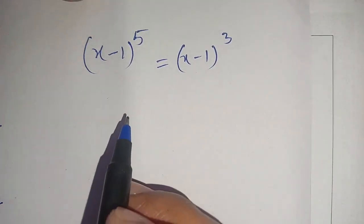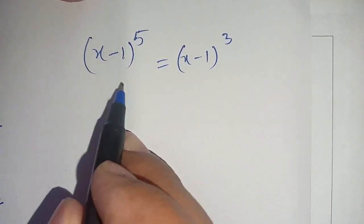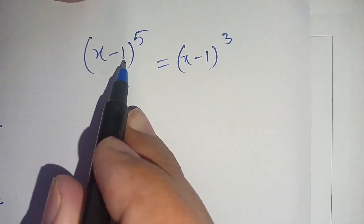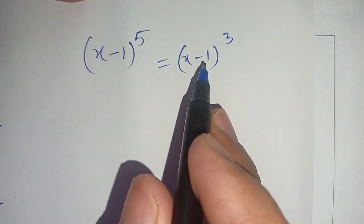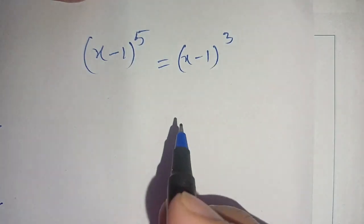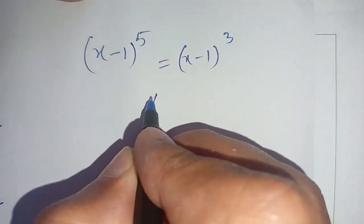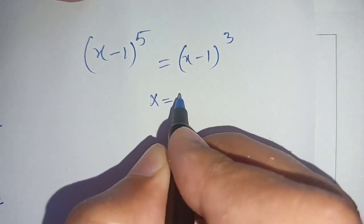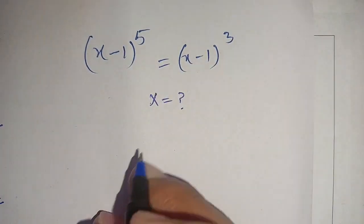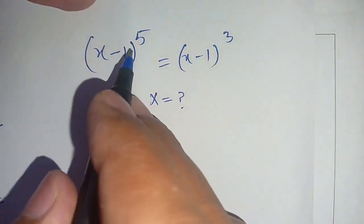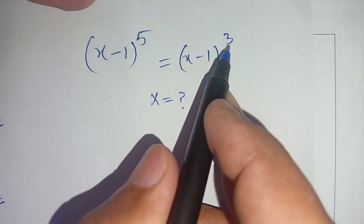Hello everyone. In today's video we are going to solve this problem: (x minus 1) raised to power 5 is equal to (x minus 1) raised to power 3, and we have to find the value of x which satisfies this equation. Here the power is 5 and here the power is 3.